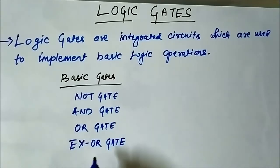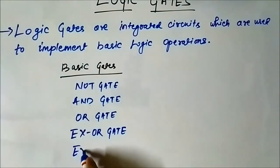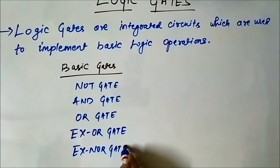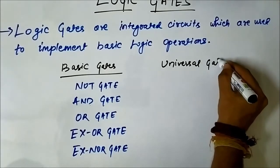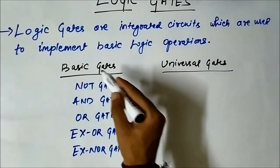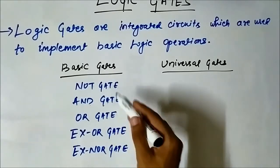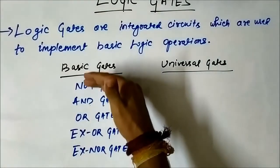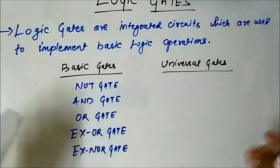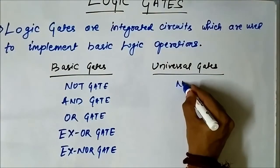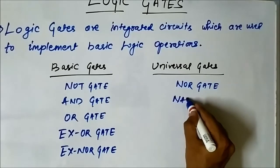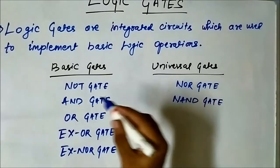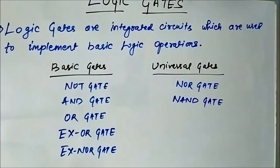Then we have another category of logic gates called the universal gates. They are called universal gates because each of the expressions which we get as the output of the basic gates can be implemented using these universal gates. The two universal gates are the NOR gate and the NAND gate.